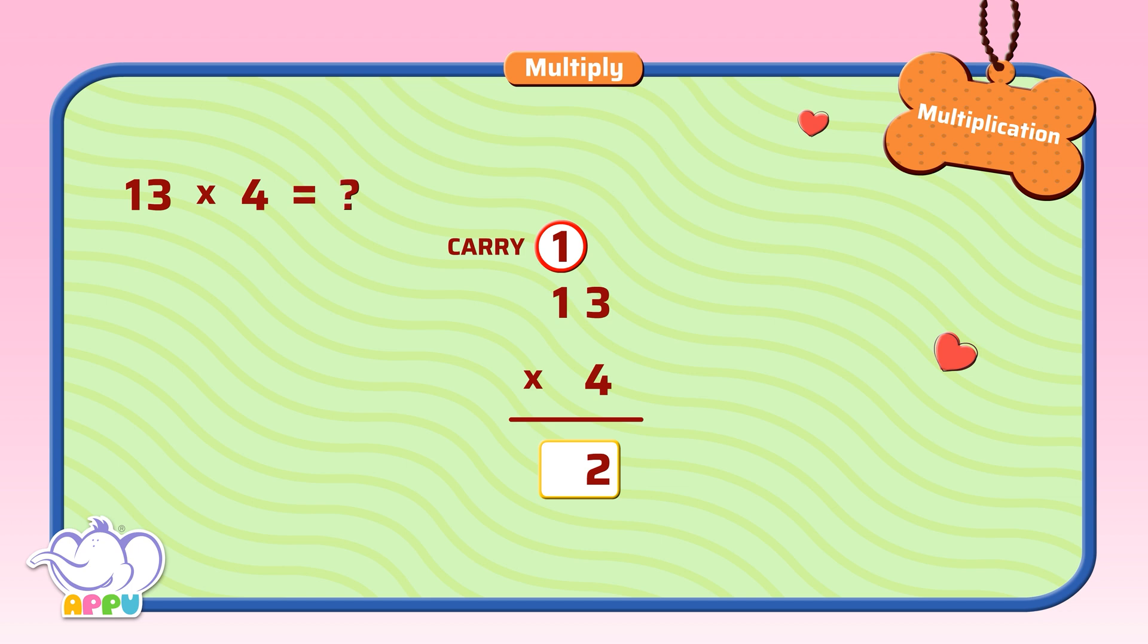Step 2: Multiply 4 with the tens digit. 4 times 1 equals 4. We add the carry over 1, so 4 plus 1 equals 5. So the answer is 52. Amazing!